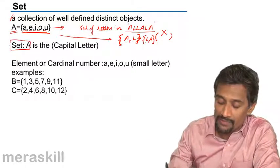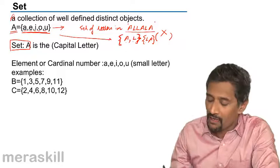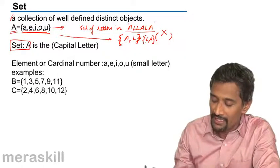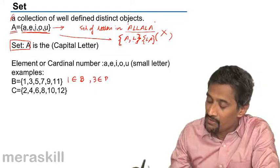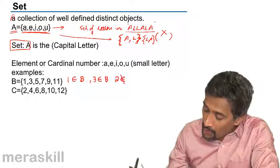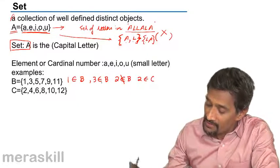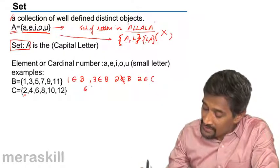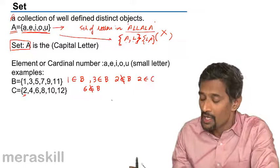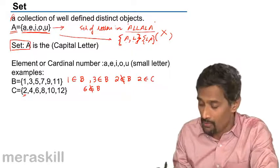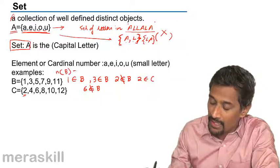The name of the set is always written in capital letters. Then you have elements of a set. The elements of set B are 1, 3, 5, 7, 9, 11. So you say 1 is an element of set B, 3 is an element of set B. But 2 is not an element of set B, because 2 doesn't belong to this. 2 is an element of set C because 2 belongs here. Similarly, 6 in B - does it satisfy? No, 6 is not an element of set B. So when you say so-and-so is an element, it means the member - it is a member.